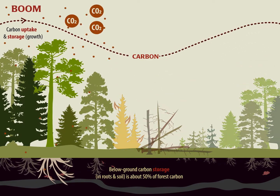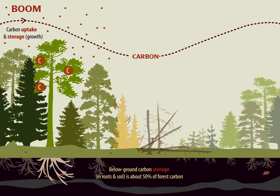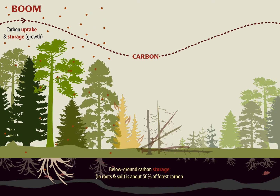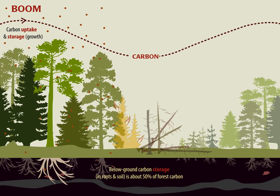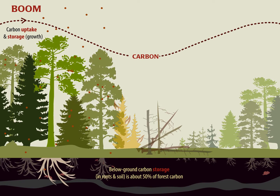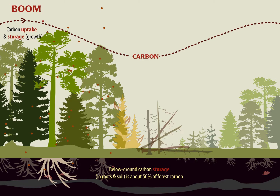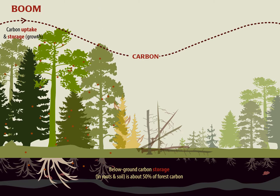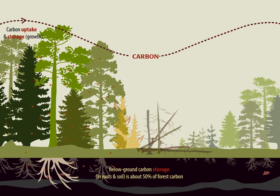Carbon uptake and storage occur during tree growth and reflects the boom period. While the most rapid carbon uptake and storage occurs in young stands, all living trees take up and store carbon. Living trees remove carbon dioxide from the atmosphere and store it throughout the forest ecosystem.